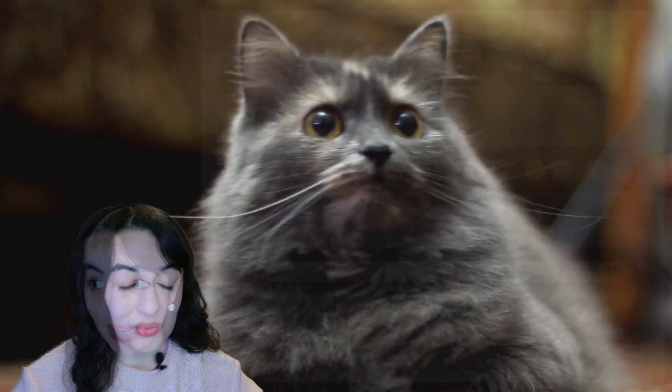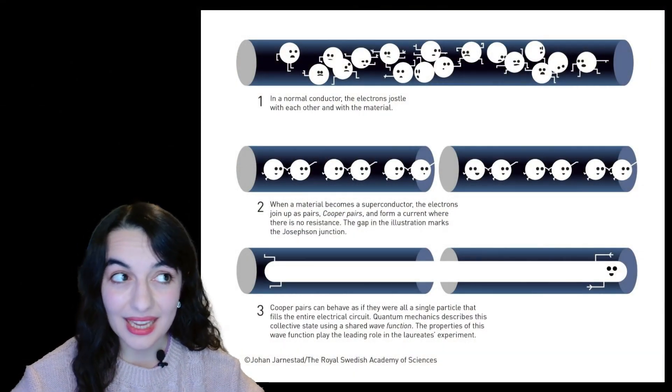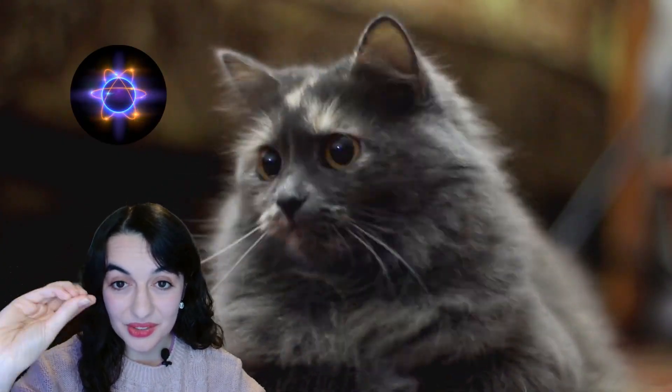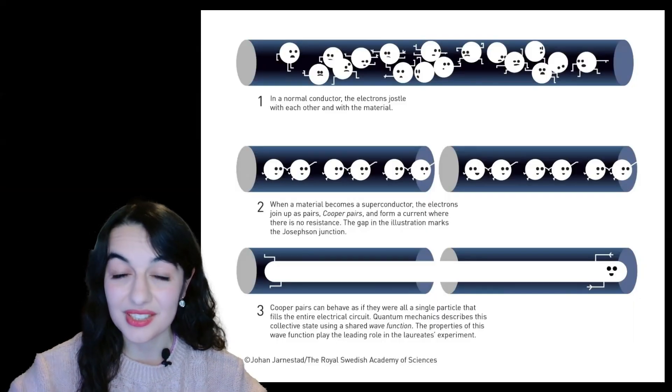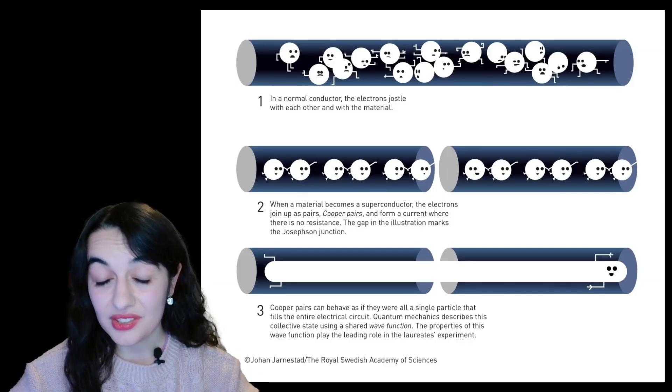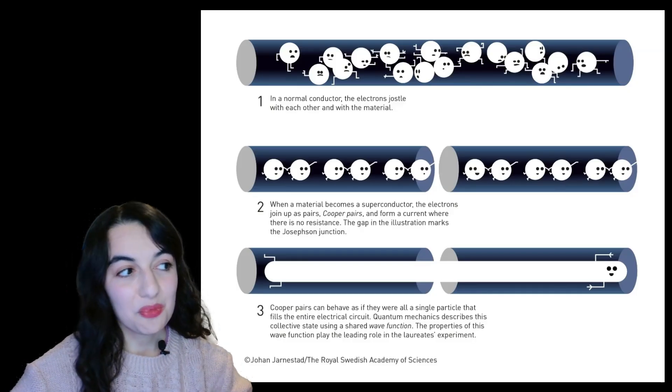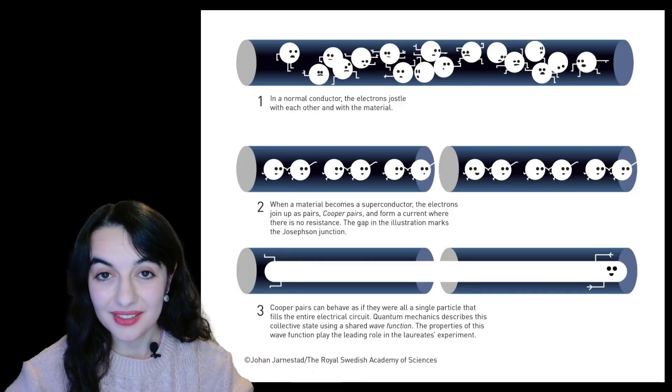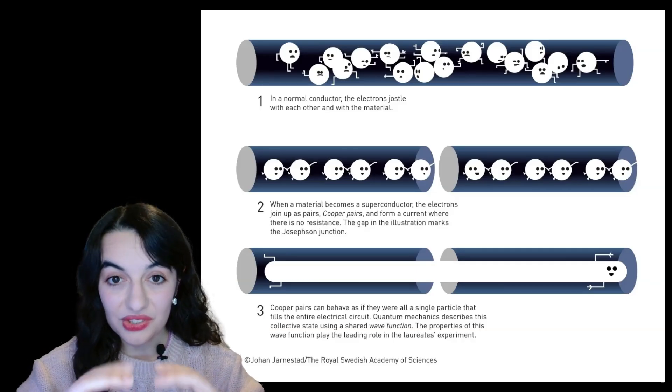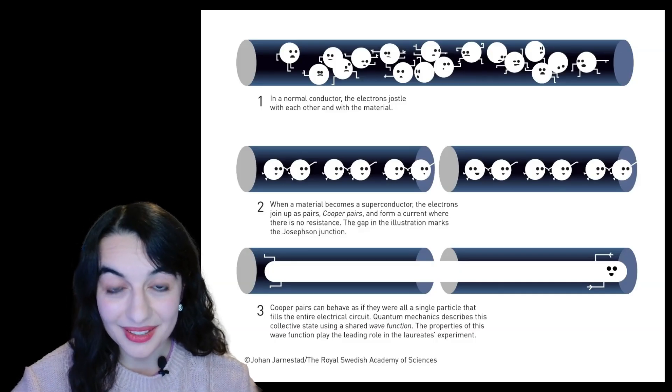And that's the question of would Schrödinger's cat actually go into a superposition? Or does the cat count as an observer and the cat actually observed the radioactive atom and caused it to collapse into just a single state? And one aspect of trying to solve this problem is to consider pushing the boundaries of putting a system into superposition to larger and larger macroscopic scales.